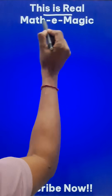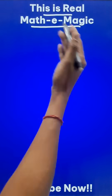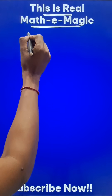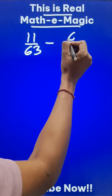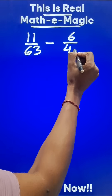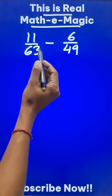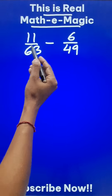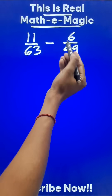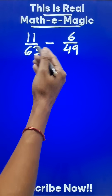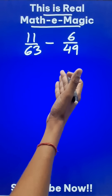Look at this real mathematical trick to add and subtract fractions — big fractions like 11 upon 63 minus 6 upon 49. Every student is going to face a problem taking the LCM, or lowest common multiple, of 63 and 49. So instead, let's find the HCF, or highest common factor.